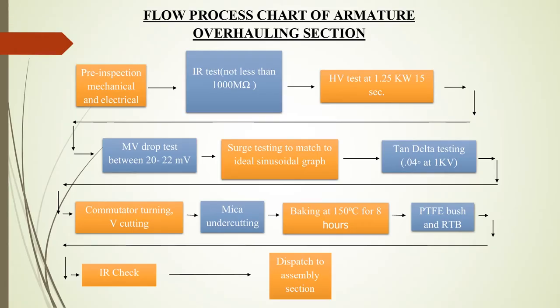In the armature overhauling section, armatures come in after fitting from the stripping section. Pre-inspection is carried out in the form of mechanical and electrical inspection. In mechanical inspection, the physical dimensions obtained are matched with standard values. After that, an IR test is carried out in which the value should be more than 1000 Mega Ohms. Then a high voltage test on power coils of the armature is done in which leakage current is measured — for good quality insulation, leakage current should be less than 25 milliamperes per kilovolt. A millivolt drop test is performed across each segment of the commutator with a 150 ampere DC supply to get a voltage drop between 20 to 22 millivolts. Surge testing is then done in which insulation of conductors is checked and compared with the standard sinusoidal graph. A tan delta test is done to check the quality of insulation.